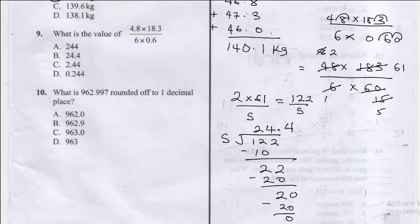So from here you can see now we have 0. Our final answer is going to be 24.4. So for me the correct answer here is B. So as easy as that you can attend all these questions. Now question 10 says what is 962.997 rounded off to one decimal place?